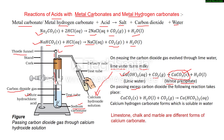But if we pass excess carbon dioxide, the mixture becomes clear again — the milkiness disappears. This is because excess carbon dioxide reacts with solid calcium carbonate along with water to form calcium hydrogen carbonate, which is soluble in water (AQ). That is why the milkiness disappears.